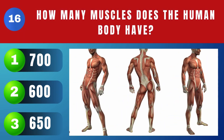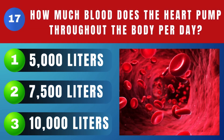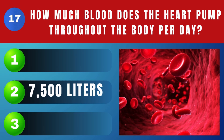How many muscles does the human body have? 650. How much blood does the heart pump throughout the body per day? 7,500 liters.